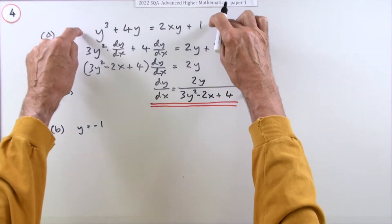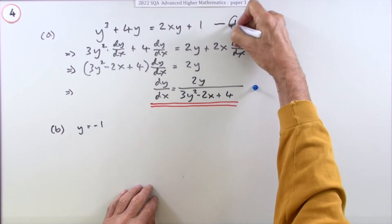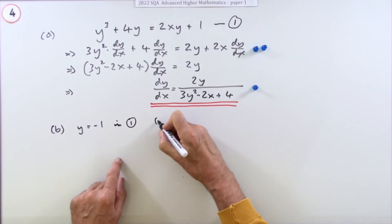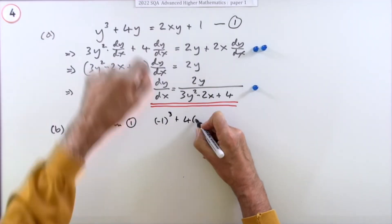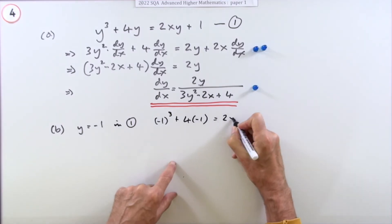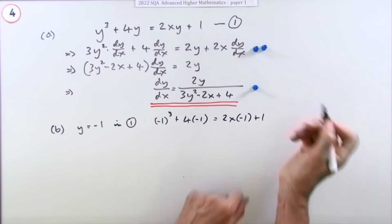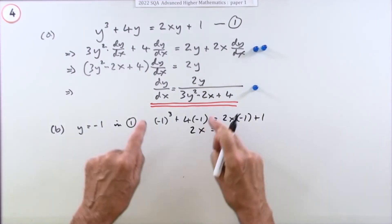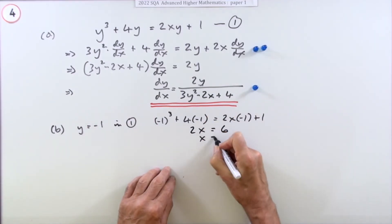Going back to equation one, if I put y = -1 in, I end up with (-1)³ + 4(-1) = 2x(-1) + 1. That's -2x. Bring that over, that's -5, that makes 6, so x is 3.